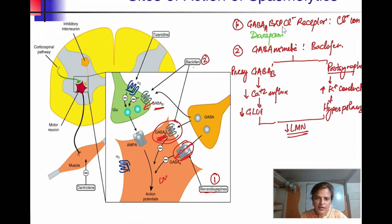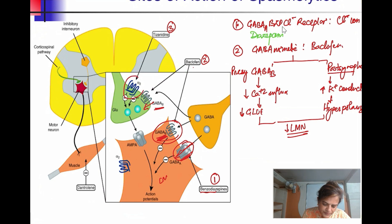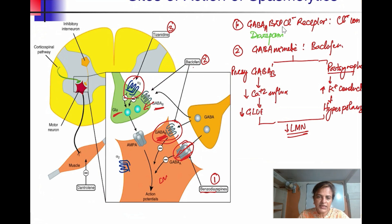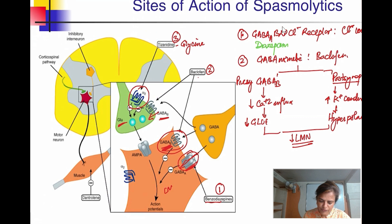The third group is tizanidine, an alpha-2 agonist similar to clonidine. It acts presynaptically to inhibit the release of excitatory neurotransmitters and facilitates the release of the inhibitory neurotransmitter glycine.